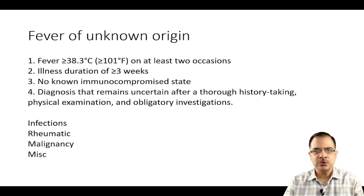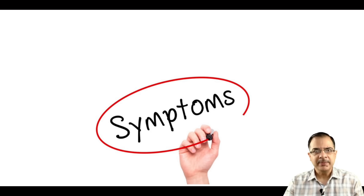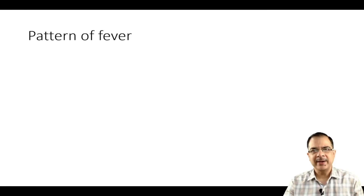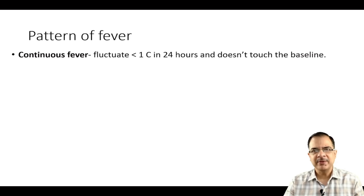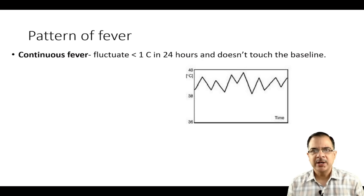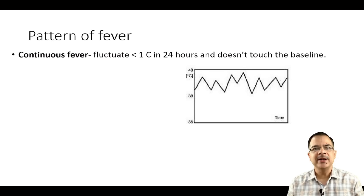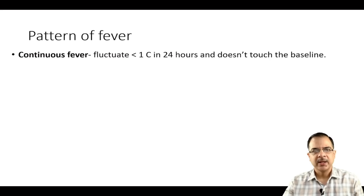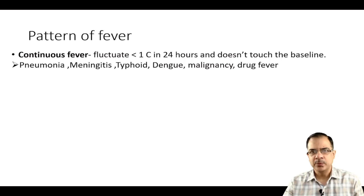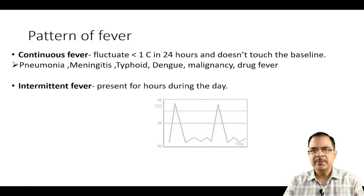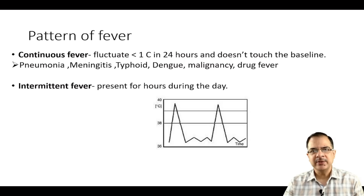Coming to symptoms — according to the fever pattern, continuous fever means the fever fluctuates less than one degree Celsius in 24 hours and does not touch the baseline. Important causes of continuous fever are pneumonia, meningitis, typhoid, dengue, malignancy, and drug-induced fever.